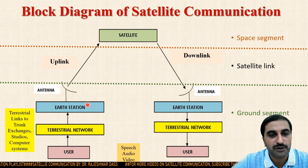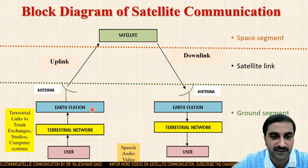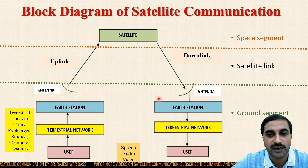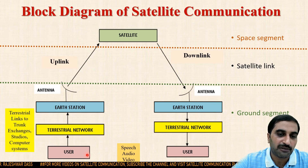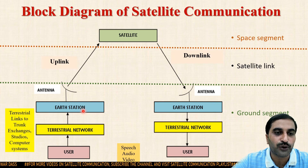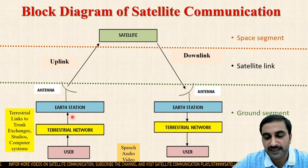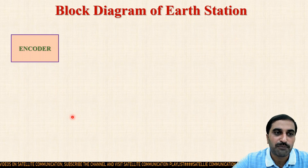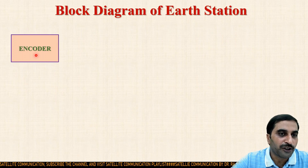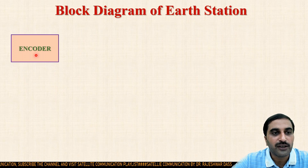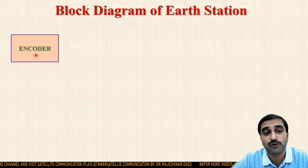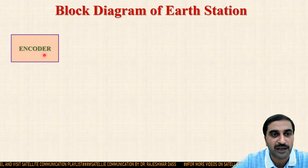Ab saara ka saara us information ka processing hona hai, vo hamaara transmitting earth station pe hoga. Jo hamaara signal hai jo earth station mein input diya, that signal is known as the baseband signal. Ab ye baseband signal, if we look at the basic block diagram of the earth station, that comes to the encoder part. The encoder will encode that baseband signal according to whatever our requirement is — whichever type of encoding we want, we will place that encoder here.